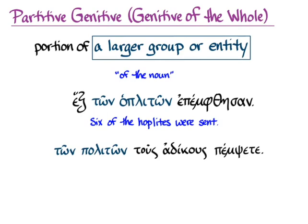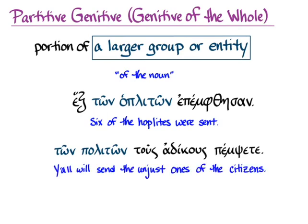Another example: ton politon tus adikus pemsata — y'all will send the unjust ones of the citizens. There's a whole big group of citizens; that's the larger entity, the larger group. We're only going to send the smaller portion — the unjust ones — of that larger group. And Greek does that the same way that English does that. Y'all will send the unjust ones of the citizens. And that's your partitive genitive.